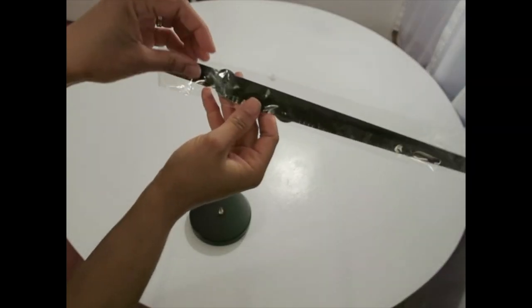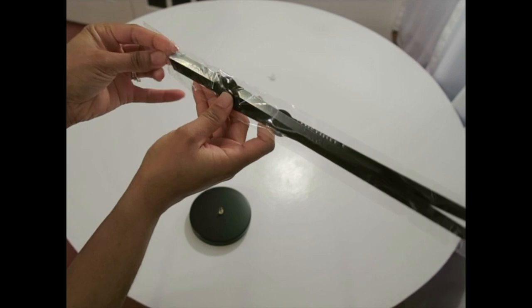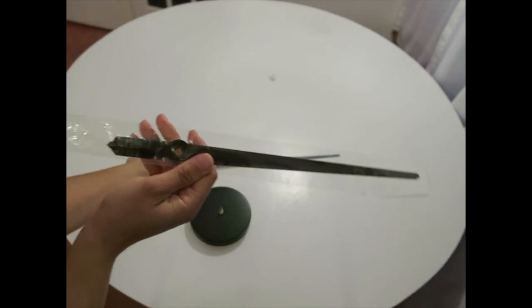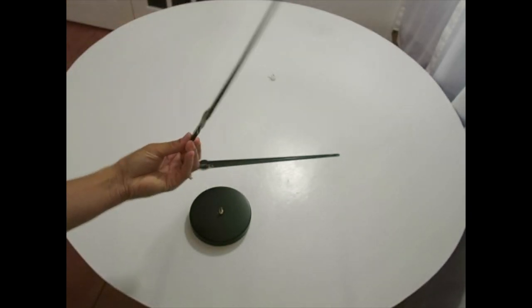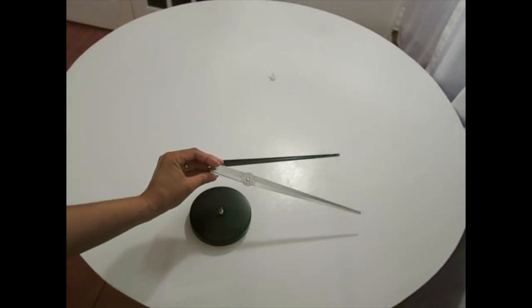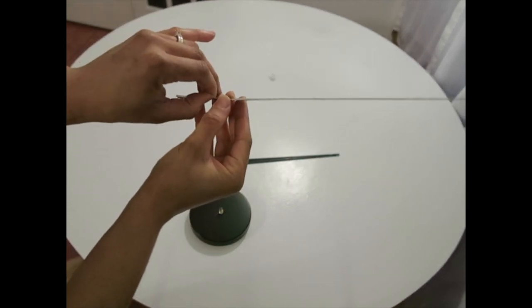And these are the hands, the minute hand and the hour hand. Take those out. And it has this little plastic sheet on it, so we're just going to take that off.